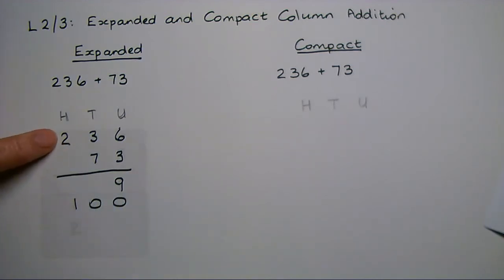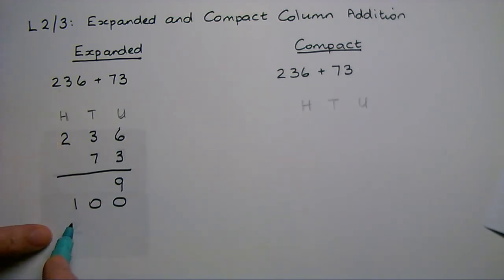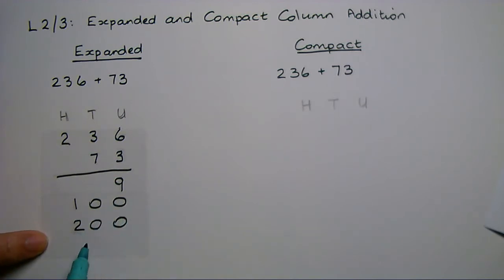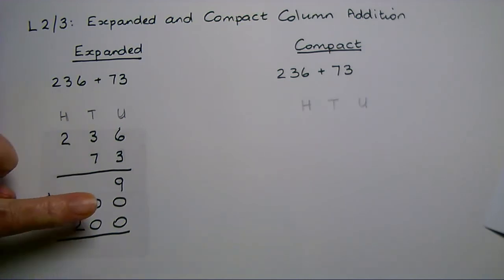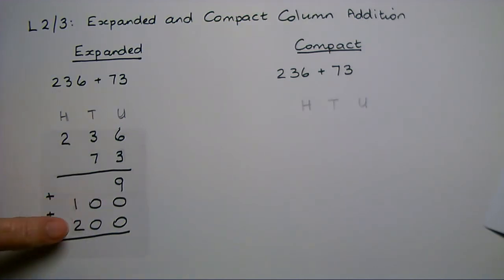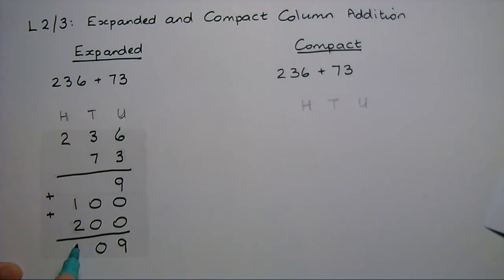Now I'm just going to do the hundreds. There aren't any hundreds in 73, so there's just the 200 to write on the next line. And now I add the 3 parts that I've found: the 9 units, the 10 tens, and the 200. I add all those again in place value — units first, then tens, then hundreds.